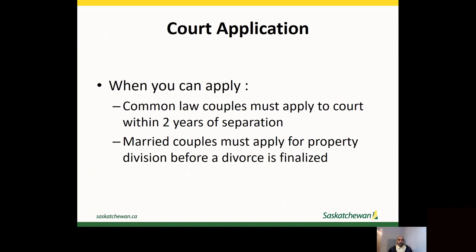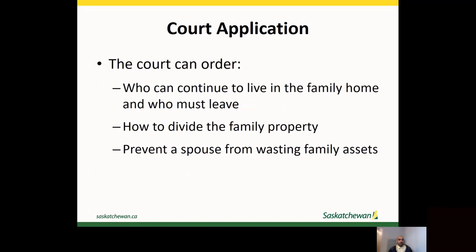If parties can't come to an agreement, they can apply to the court. Applications to the court must be made within two years of common-law spouses separating, or prior to a divorce for married spouses. The Family Property Act allows a spouse to apply to the court to decide who can continue to live in the family home following separation, and who gets to use the household goods, including the main family vehicle. This is called an Order for Exclusive Possession.